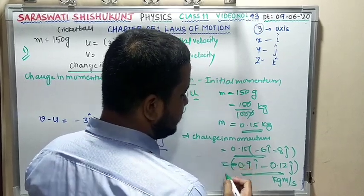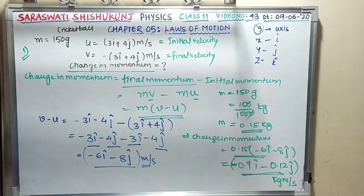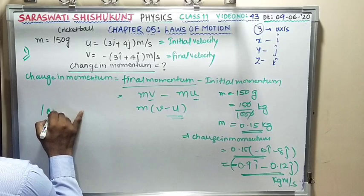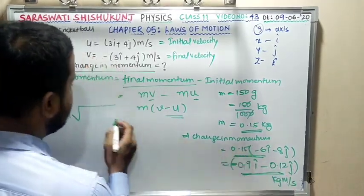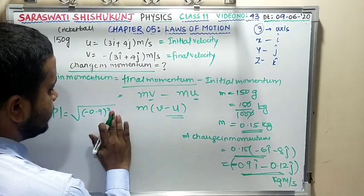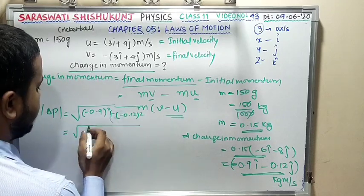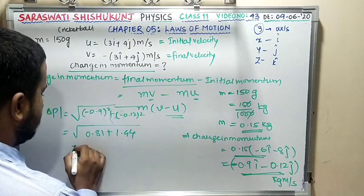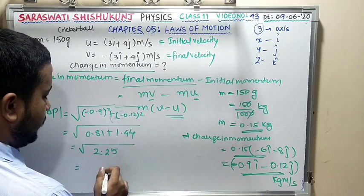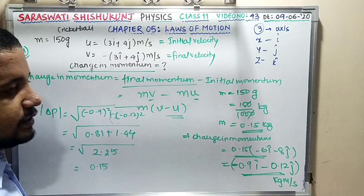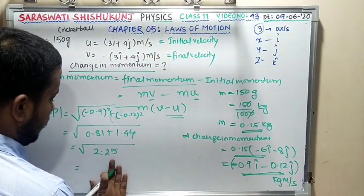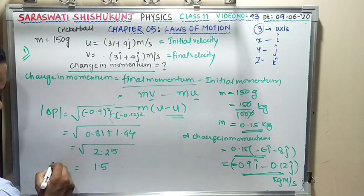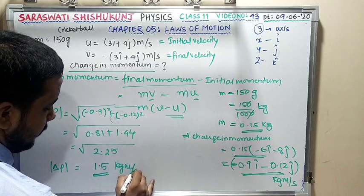The magnitude of the change in momentum is |ΔP| = √(0.9² + 1.2²) = √(0.81 + 1.44) = √2.25 = 1.5 kg·m/s. This is the final answer.